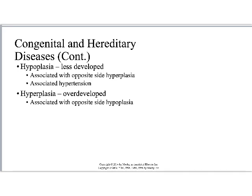Continuing with congenital and hereditary diseases: hypoplasia means the kidney is less developed, and it's associated with opposite-side hyperplasia. It can also be associated with hypertension — if a kidney is too small, it can't filter properly, which increases blood pressure. Hyperplasia, on the other hand, is an overdeveloped kidney, often associated with the opposite side of hypoplasia. So if one kidney is too small, the other is generally bigger.